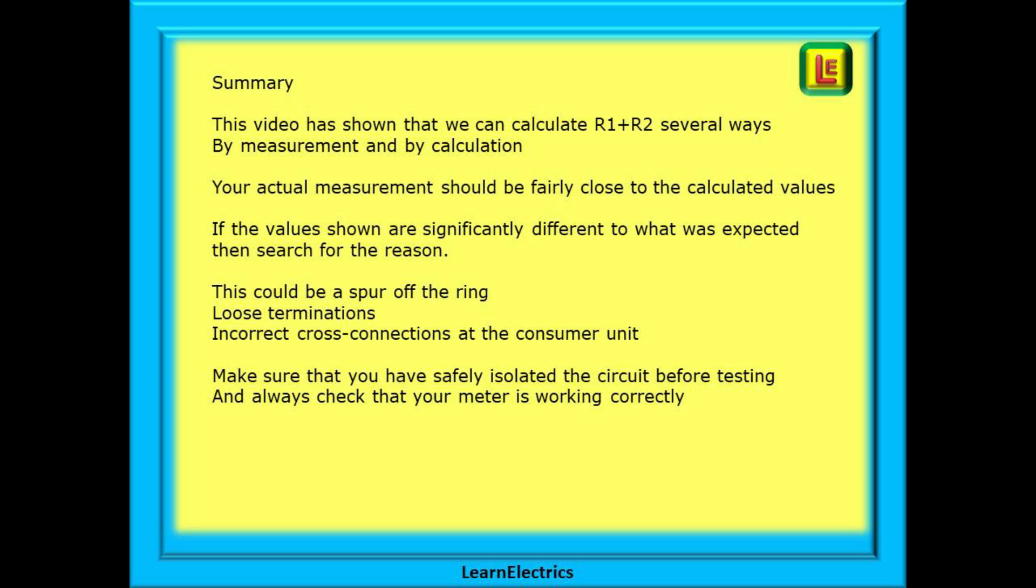For example, this could be a spur off the ring, or loose terminations, and even your own incorrect cross connections at the consumer unit. Always make sure that you have safely isolated the circuit before testing, and always check that your meter is working correctly.